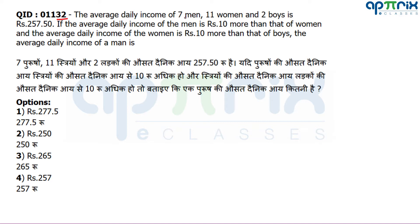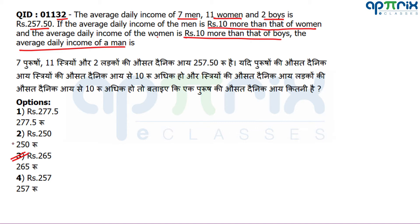Question number 32: Average daily income of 7 men, 11 women and 2 boys. Average daily income of men is 10 rupees more than women, and women is 10 rupees more than boys. You can mark directly the third option without solving anything. I'll explain the logic using an average concept.